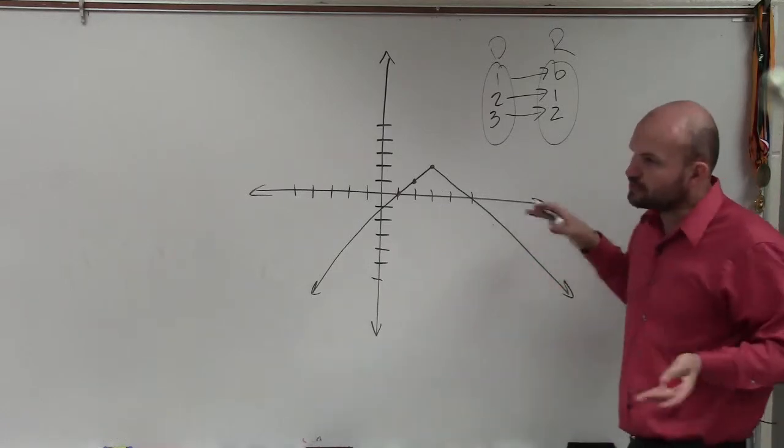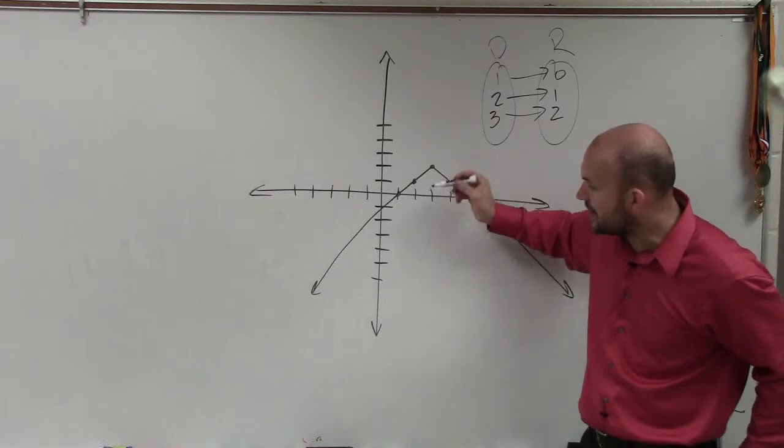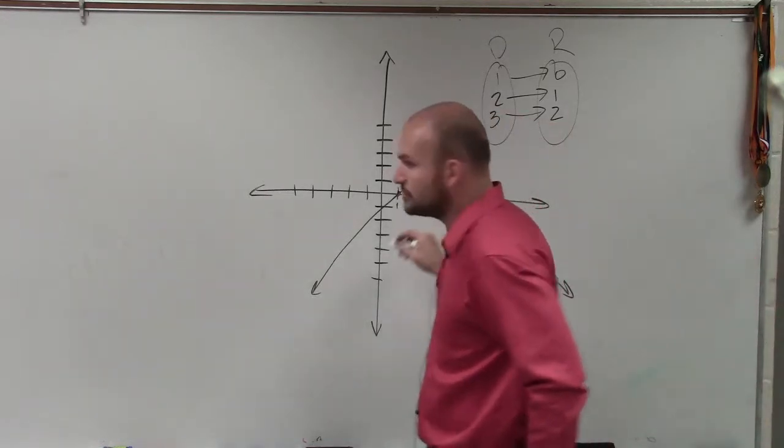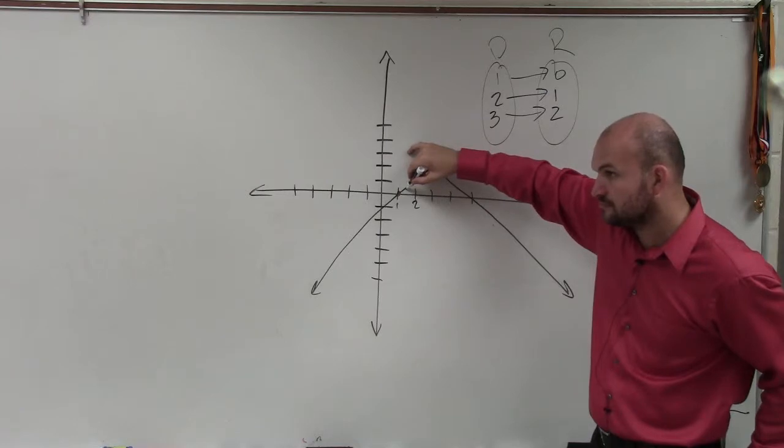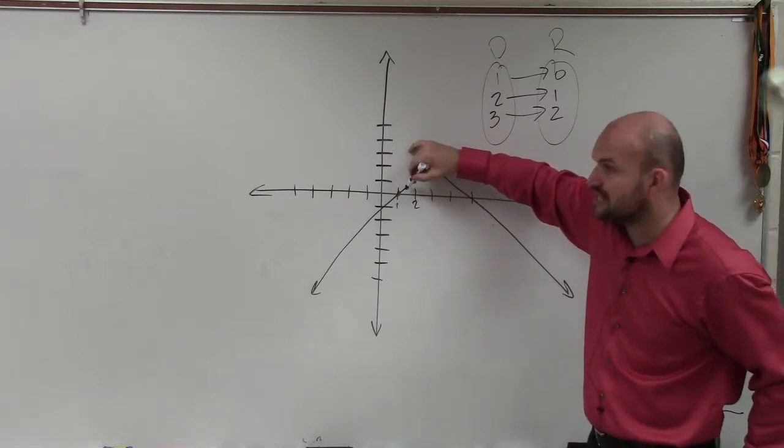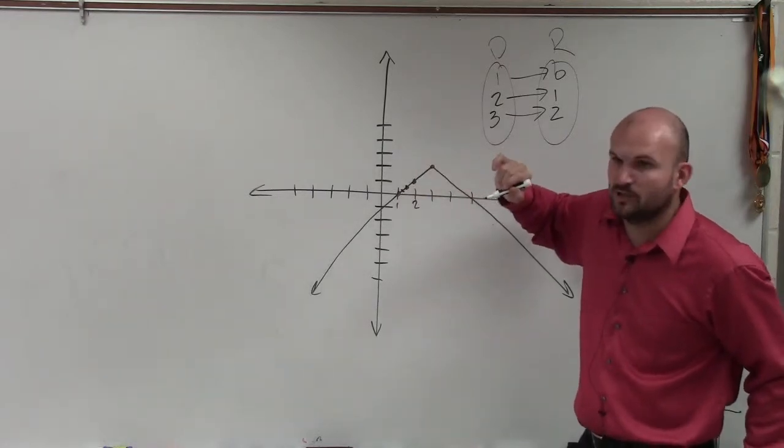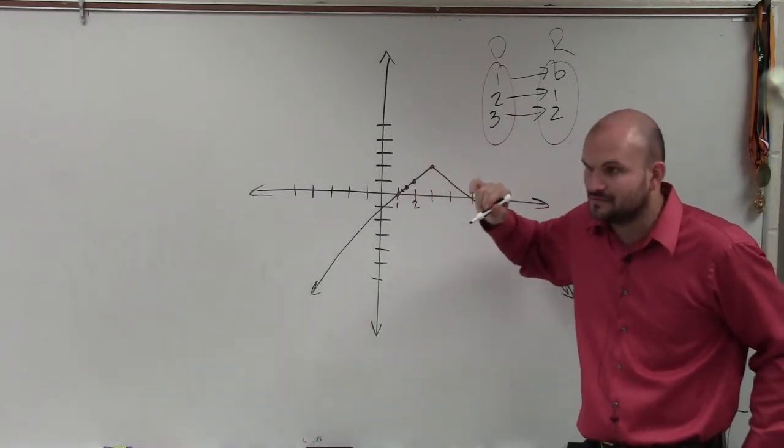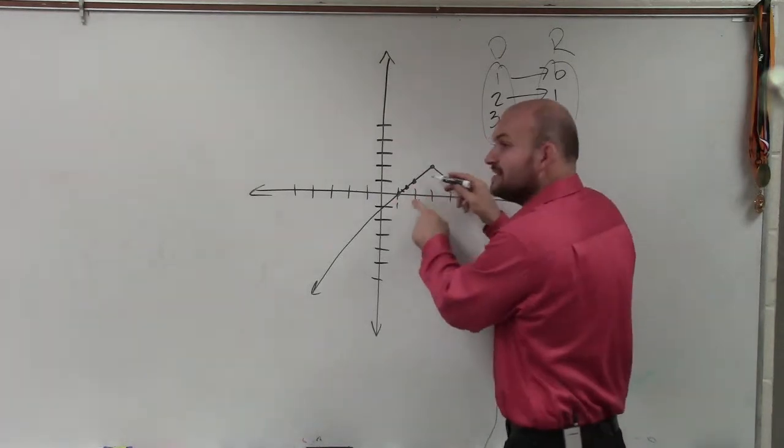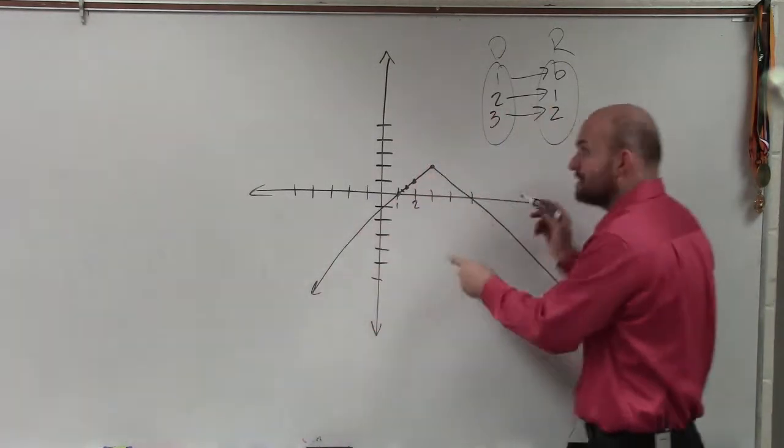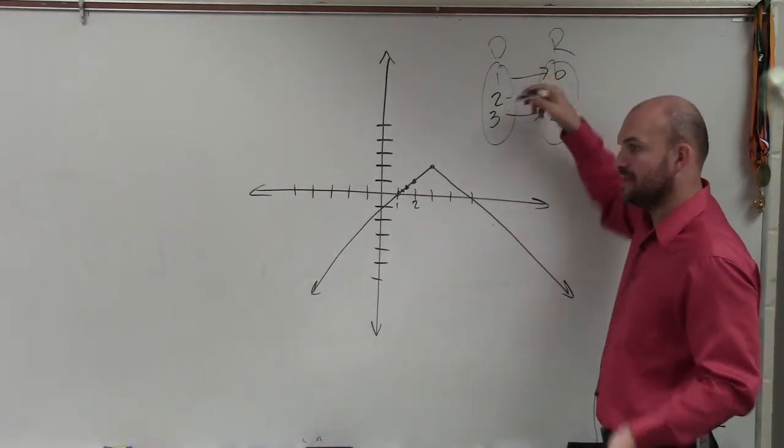But now we're looking at a graph. And let's look between x value of 1 and the x value of 2. Is there an x value for 1.5? Yeah. Is there an x value for 1.25? What about 1.26? 1.2000005? Yeah, there's infinite many points between there, right? So the same thing. There's infinite many points on this graph. So I can't write down all those numbers.